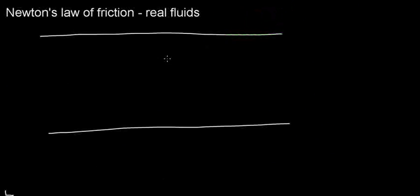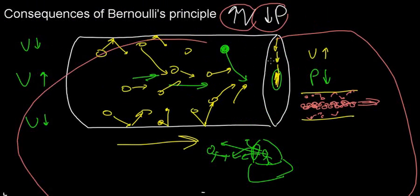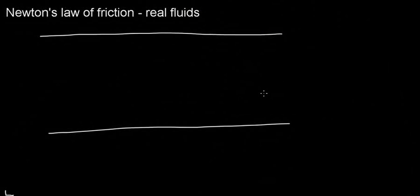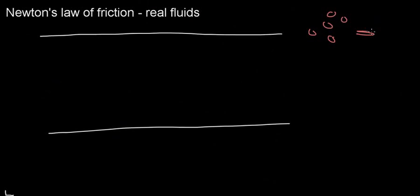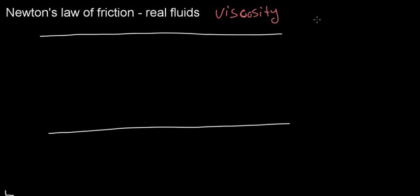We're going to move on and discuss what a real fluid is. A real fluid is basically a fluid whose particles are interacting with one another. We know that if we have particles flowing, they're going to interact — it's impossible for them not to. This is called viscosity. Viscosity is a liquid's resistance to motion. If we think of oil, or honey, honey has high viscosity — definitely higher than water.